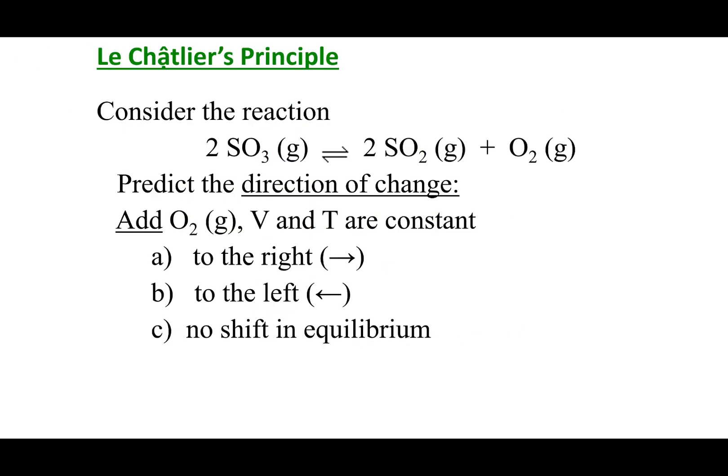Let's try another quiz question and do this one without math — just think about the concept. Let's say I add O2 to the system at equilibrium. What I'm doing is upping the concentration of O2, which is on my product side. So I'm making too much O2. To get rid of that excess O2, I can shift and consume it to make more reactant. So I'm going to shift to the left.